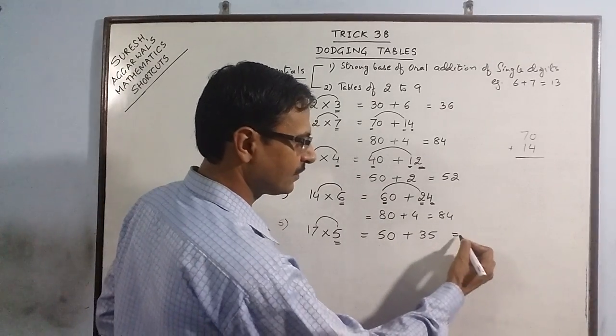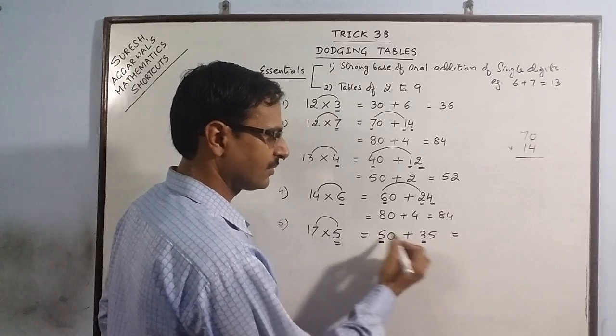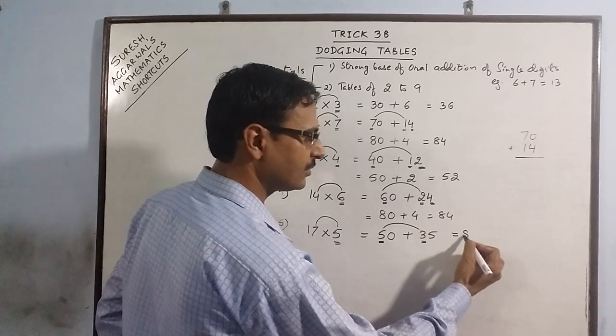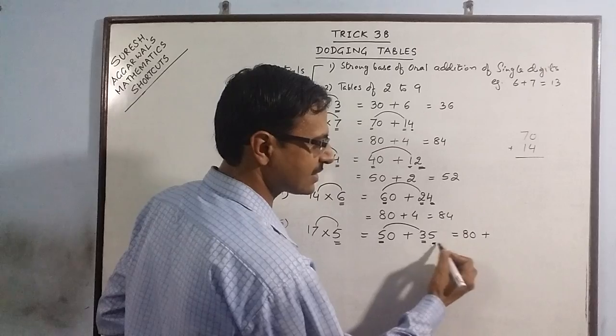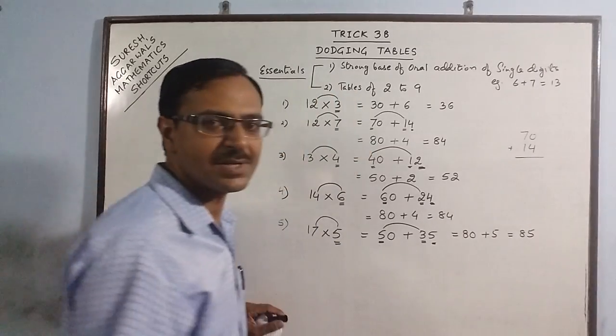For adding this, tens digits: 5 plus 3 is 8, put a 0 and write this number, so 85. See?